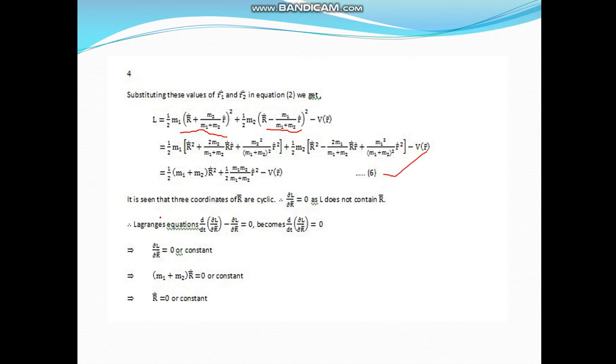It is seen that three coordinates of R are cyclic. That is del L by del R equals 0 as L does not contain R. A coordinate which does not appear in Lagrangian is called cyclic coordinate. The Lagrangian equation in terms of capital R is d by dt of del L by del R dot minus del L by del R equals 0. So it becomes d by dt of del L by del R dot equals 0.